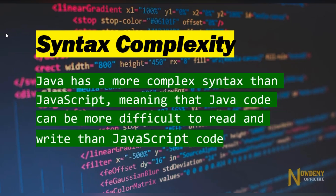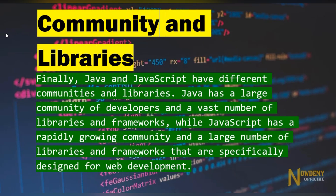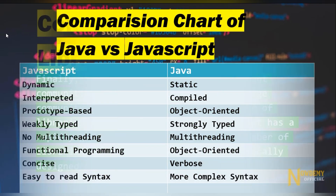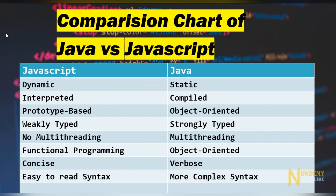Syntax complexity: Java has more complex syntax than JavaScript, meaning that Java code can be more difficult to read and write than JavaScript code. Communities and libraries: Java and JavaScript have different communities and libraries. Java has a large community of developers and a vast number of libraries and frameworks, while JavaScript has a rapidly growing community and a large number of libraries and frameworks specifically designed for web development. Let us look at the comparison chart of JavaScript versus Java.